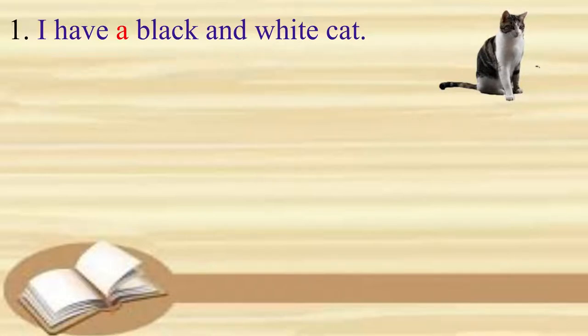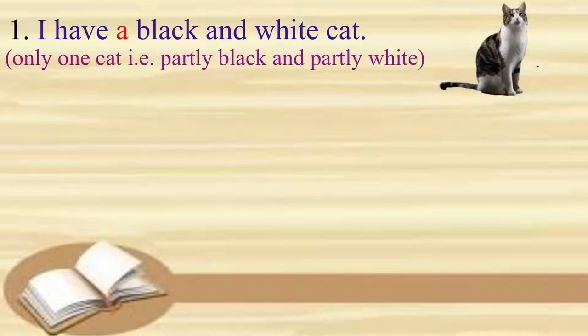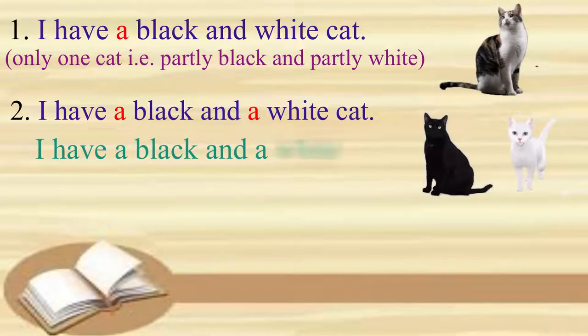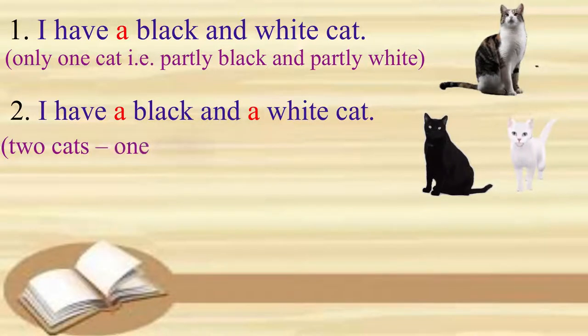Here we mean only one cat that is partly black and partly white. But if we say, I have a black and a white cat, here we mean two cats, one white and the other black.